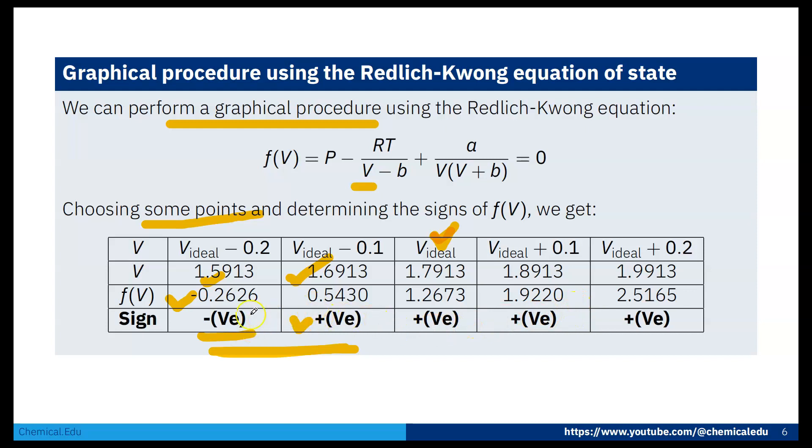For the bisection method, the condition is that f of V should be negative at one point and positive at another, so the root will lie between those two points.